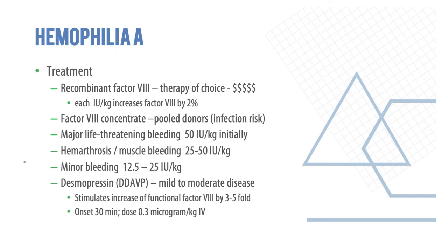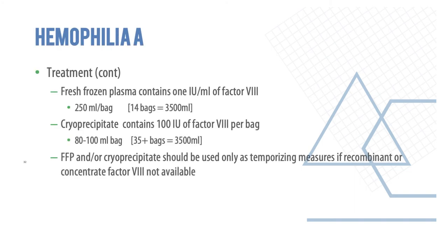Each factor 8 unit per kilogram increases factor 8 by 2%. Factor 8 concentrate can be obtained from pooled donors, though there is a risk of infection. Major life-threatening conditions may need 50 IU/kg initially. For muscle bleeding or hemarthrosis, 25–50 IU/kg is given. For minor bleeding, 12.5–25 IU/kg. Desmopressin may be used in mild to moderate disease, stimulating a 3–5-fold increase in factor levels. Fresh frozen plasma and cryoprecipitate are used as temporary measures if recombinant or concentrate factor 8 is unavailable.